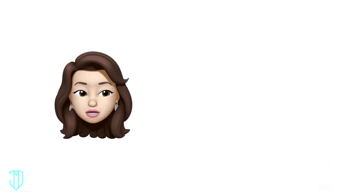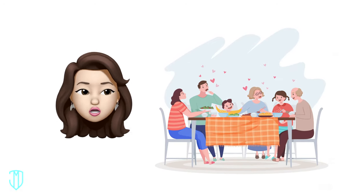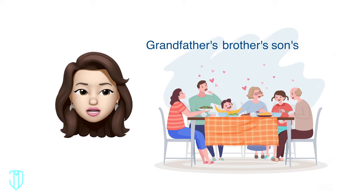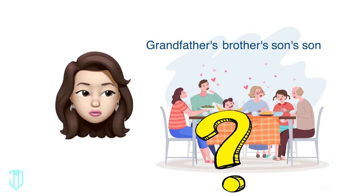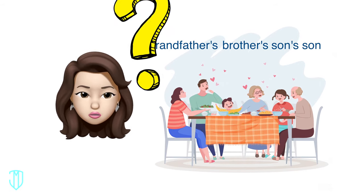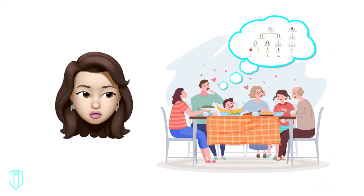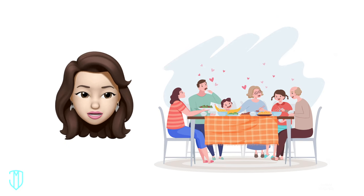So you're at a family event. You meet your grandfather's brother's son's son. What do you call him in relation to you? You navigate the family relationships in your mind. What a maze.